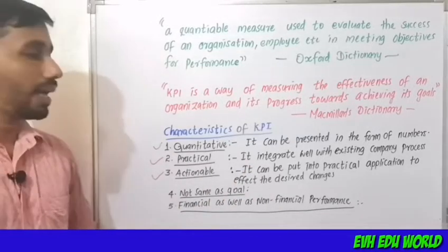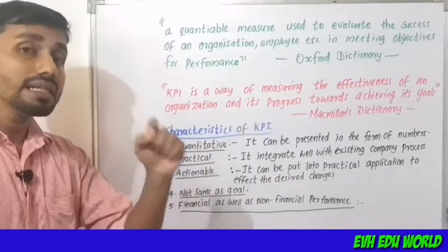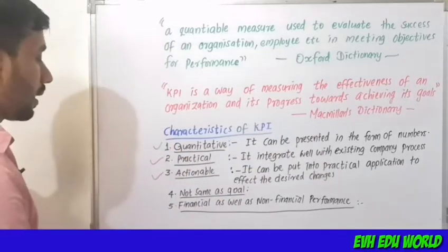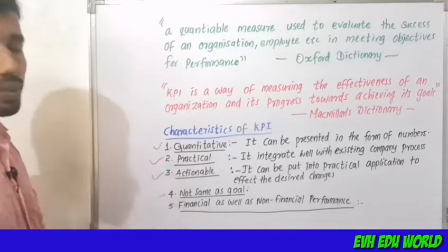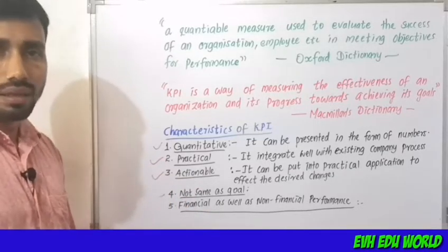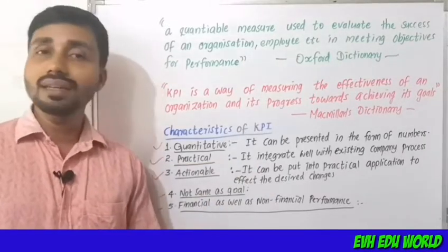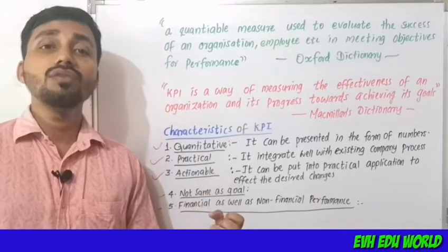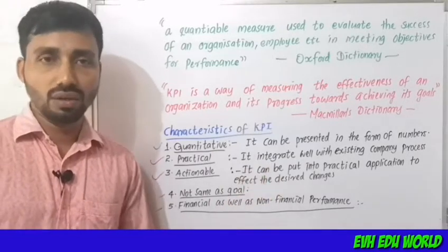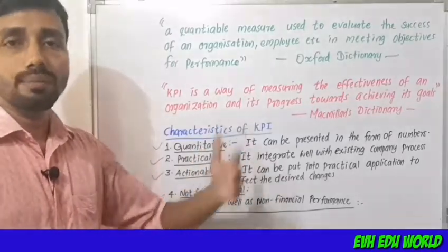Next is actionable — KPI can be put into practical application to effect the desired changes. The fourth feature is that KPI is not the same as a goal; it may be different from organizational goals. Next is financial as well as non-financial performance — KPI is a non-financial performance measure, but it contributes to the financial performance, that is, the profitability of an organization.